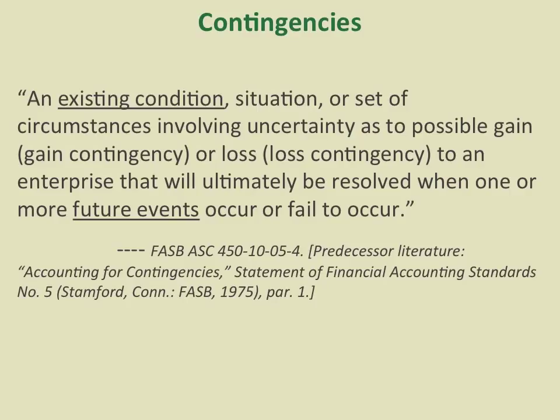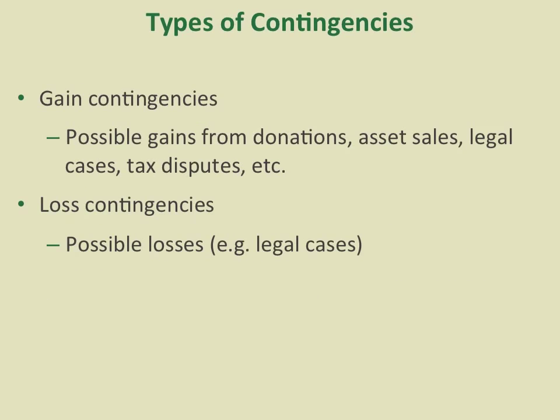It could be a gain, it could be a loss. There are two types of contingencies: gain and loss. For gain contingencies, there are possible gains from donations, asset sales, legal cases, tax disputes, etc. Loss contingencies are those possible losses that could be due to legal cases, for example.